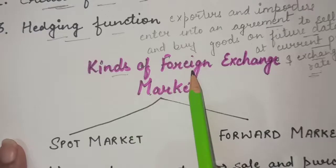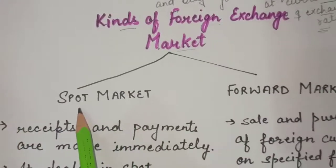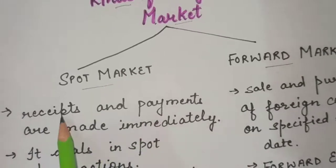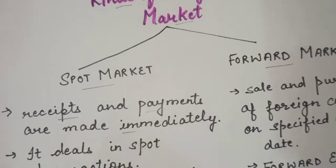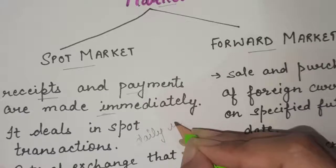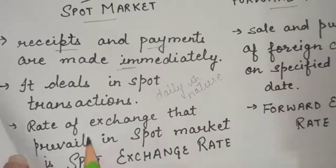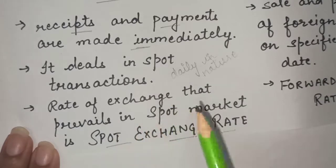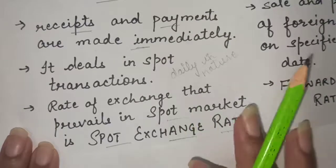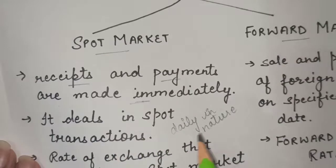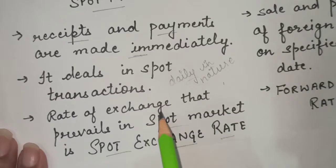There are two kinds of foreign exchange market. The first is the spot market. Spot market refers to the market in which receipts and payments are made immediately — they are not left for some future date. It deals in spot transactions, meaning it is daily in nature. The rate of exchange that prevails in the spot market is called the spot exchange rate.